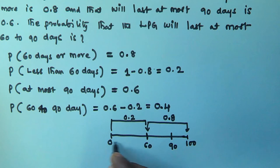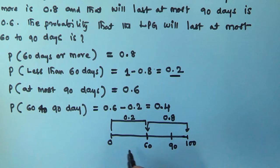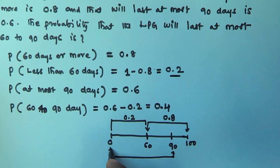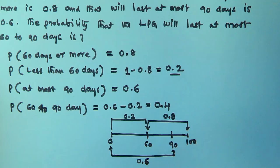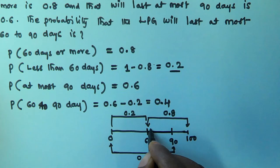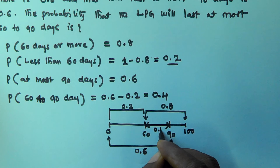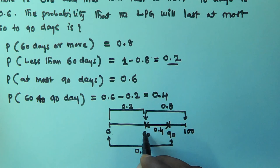This 0.2 represents the probability of the LPG lasting less than 60 days — the region from 0 to 60 days. Next, the probability of lasting at most 90 days is 0.6, so the region from 0 to 90 is 0.6. We know 0 to 60 is 0.2 and 0 to 90 is 0.6, so to find the probability for 60 to 90, we subtract: 0.6 minus 0.2, which gives 0.4.